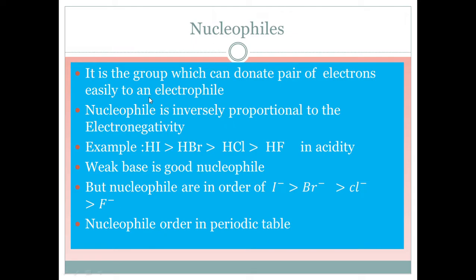Now we will see some conditions. First, nucleophilicity is inversely proportional to electronegativity. In the periodic table, from left to right, electronegativity increases, so nucleophilicity decreases. For example, taking acidity: HI is more acidic compared to HBr, HCl, and HF. A weak base is a good nucleophile, so we get I⁻, Br⁻, Cl⁻, F⁻. The nucleophilicity order will be I⁻ > Br⁻ > Cl⁻ > F⁻.